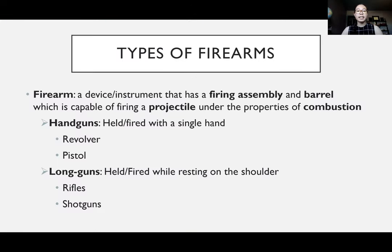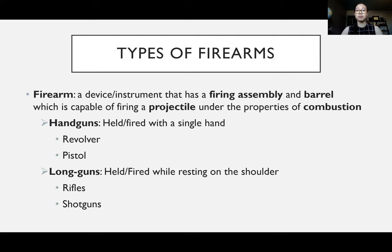A firearm is defined as a device or instrument that has a firing assembly and a barrel, which is capable of firing a projectile under the properties of combustion. A firing assembly is also known as an action, and this is the mechanism which initiates your cycle of fire — it's what starts the firing process.